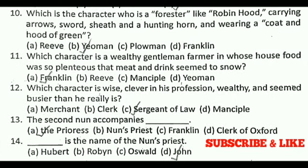Question 10: Which character is a forester like Robin Hood, carrying arrows, sword, sheath, and a hunting horn, and wearing a coat and hood of green? The correct answer is B, that is the Yeoman. Question 11: Which character is a wealthy gentleman farmer in whose house food was so plenteous that meat and drink seemed to snow?